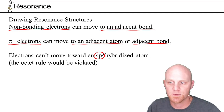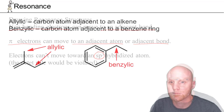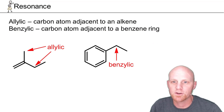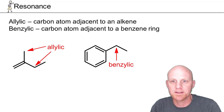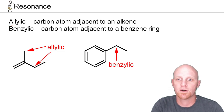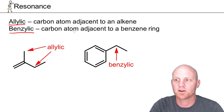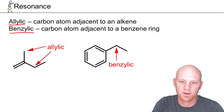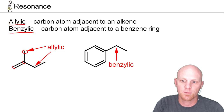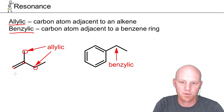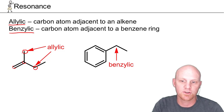If you moved electrons toward an sp3 atom, you'd violate the octet rule for that atom, which is why it's not possible. As we begin drawing resonance structures, there are a couple of new vocabulary words that are helpful: allylic and benzylic. An allylic carbon atom is a carbon atom adjacent to an alkene — a carbon double-bonded to carbon. Either carbon adjacent to the alkene qualifies, but no further away.